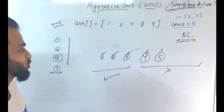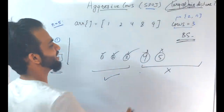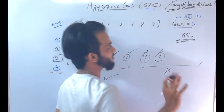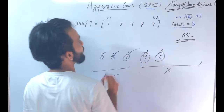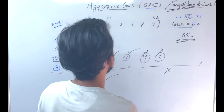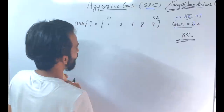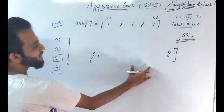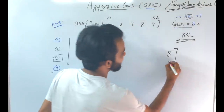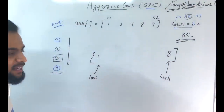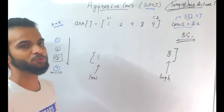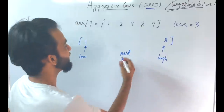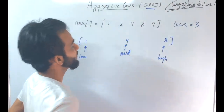The search space starts from 1 (minimum answer) and goes up to A[N-1] - A[0], which is the maximum possible distance (9 - 1 = 8). So search space is 1 to 8, with low = 1 and high = 8. The middle is (1 + 8) / 2 = 4.